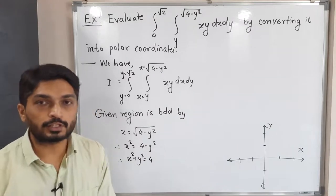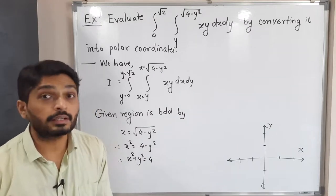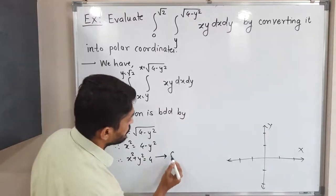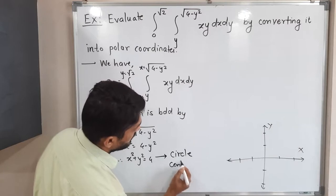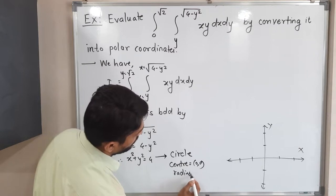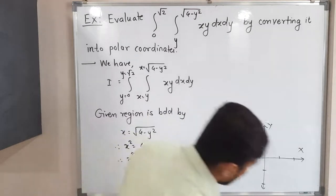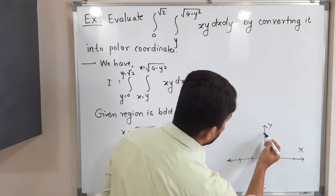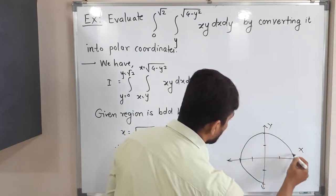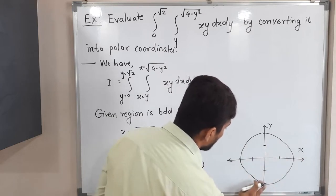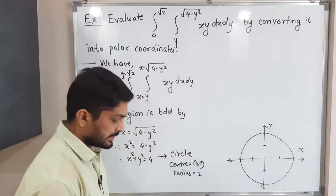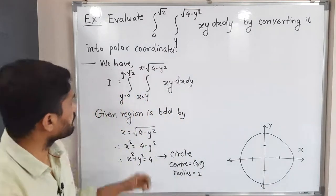This is the standard equation of a circle with center at the origin and radius 2, since 4 is the square of 2. Let me draw a rough sketch of this circle with center (0, 0) and radius 2.